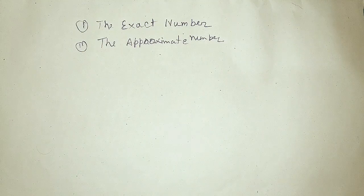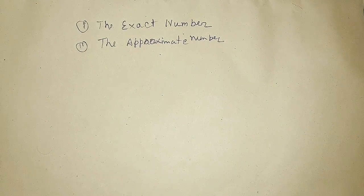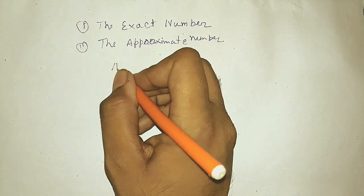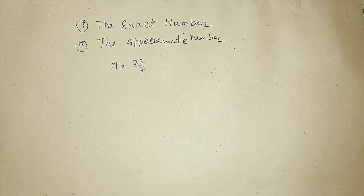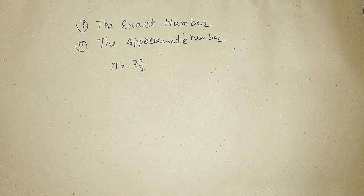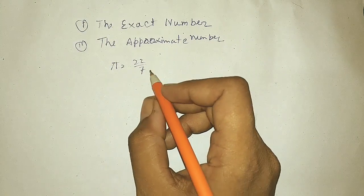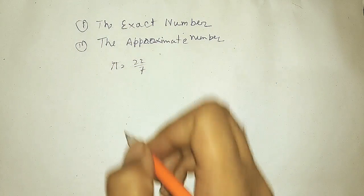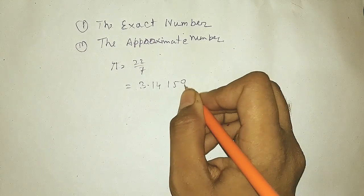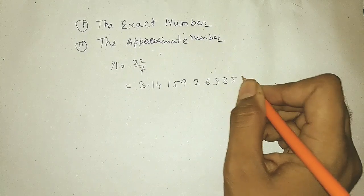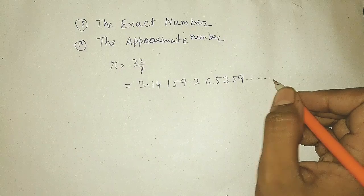Let us take the example of pi. Pi means 22 by 7, so this 22 by 7 is the exact number. But we cannot calculate with 22 by 7 in a computer because a computer cannot store a vulgar fraction, so we need to convert it into decimal form. Also, if you want to calculate with 22 by 7 on pen and paper, we also cannot do it because its decimal form is an infinite decimal — 3.14159265359 and so on.